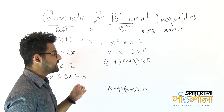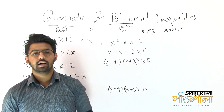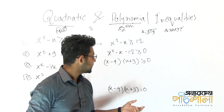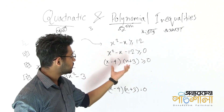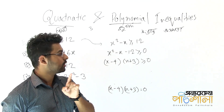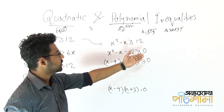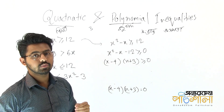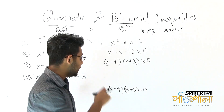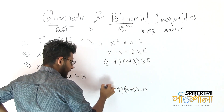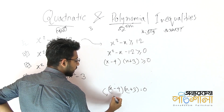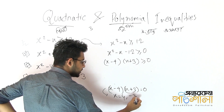We want to show how to solve this inequality. Since (x - 4)(x + 3) ≥ 0, we need to find where the product is positive. We will solve for x plus 3 and x minus 4 separately.